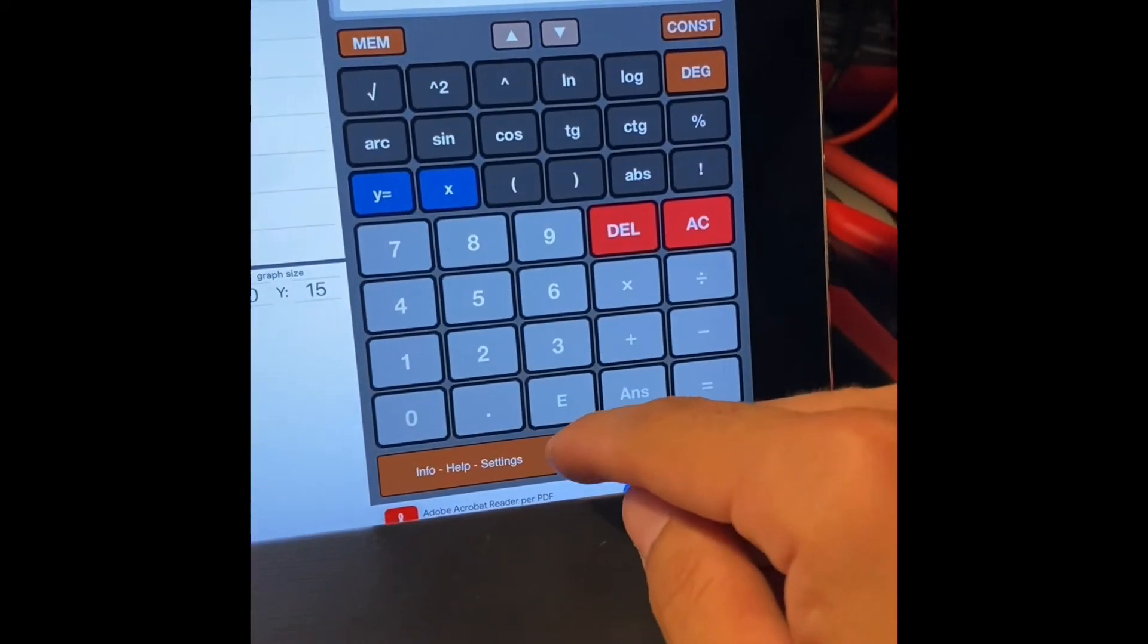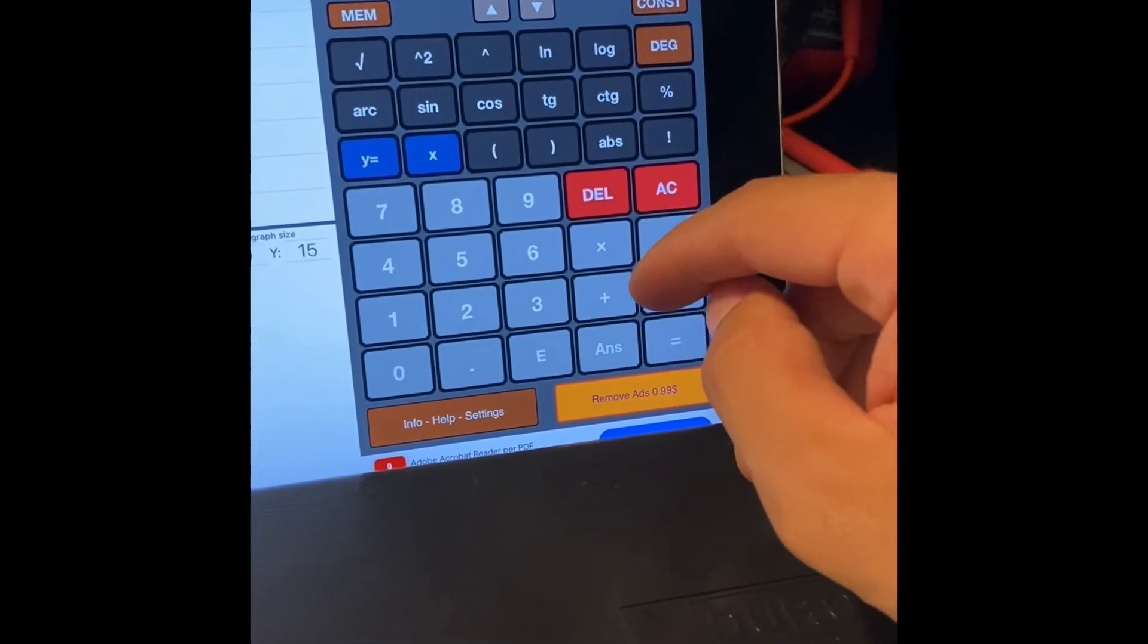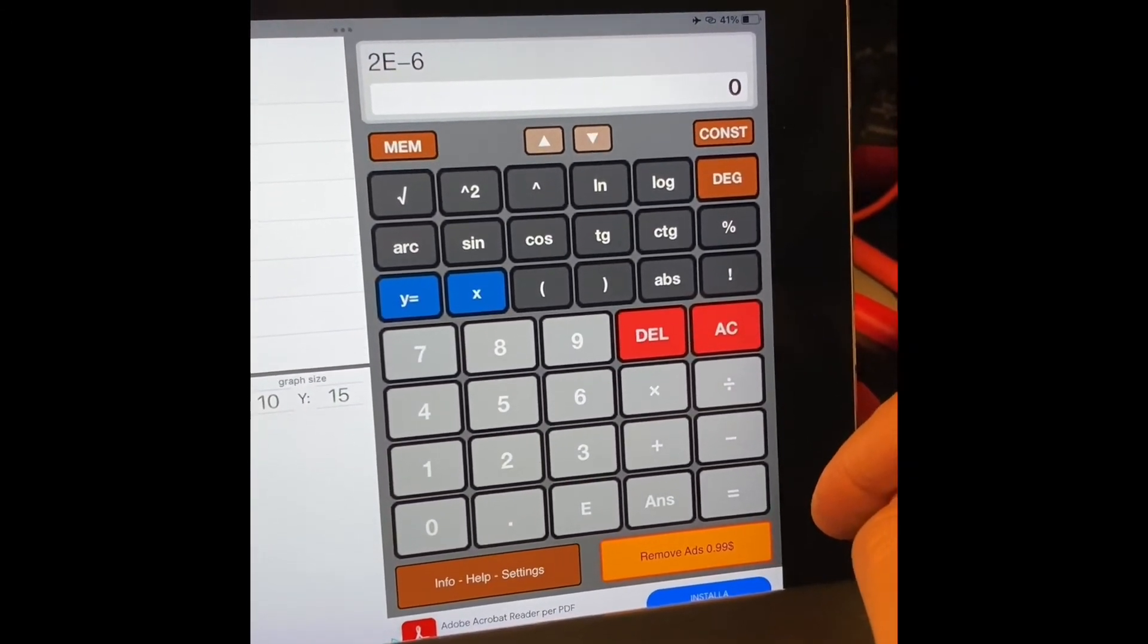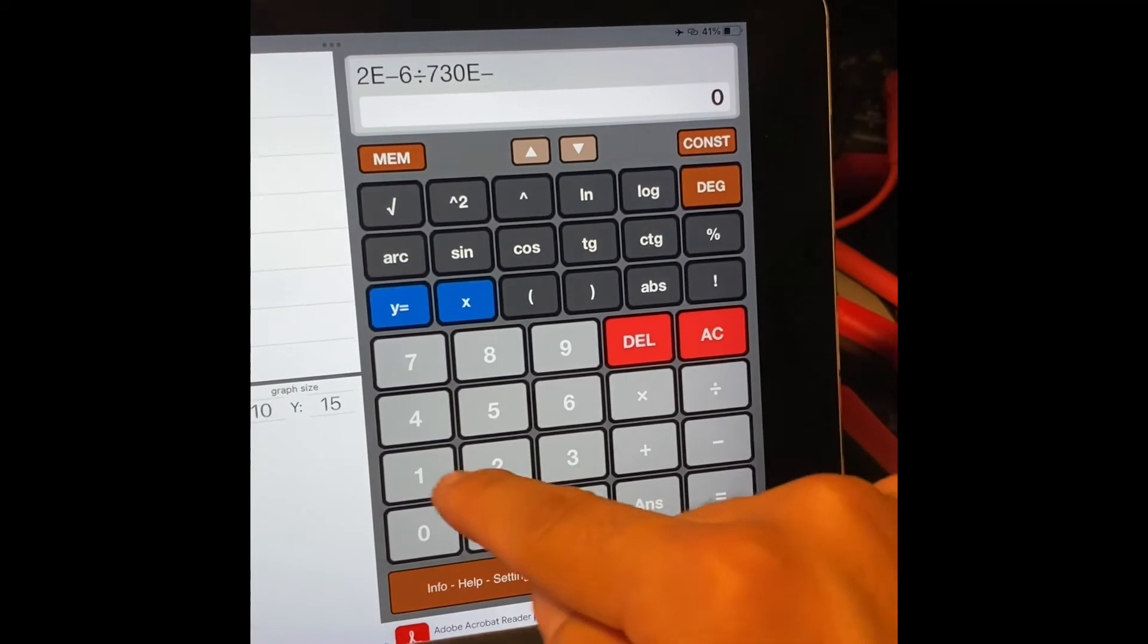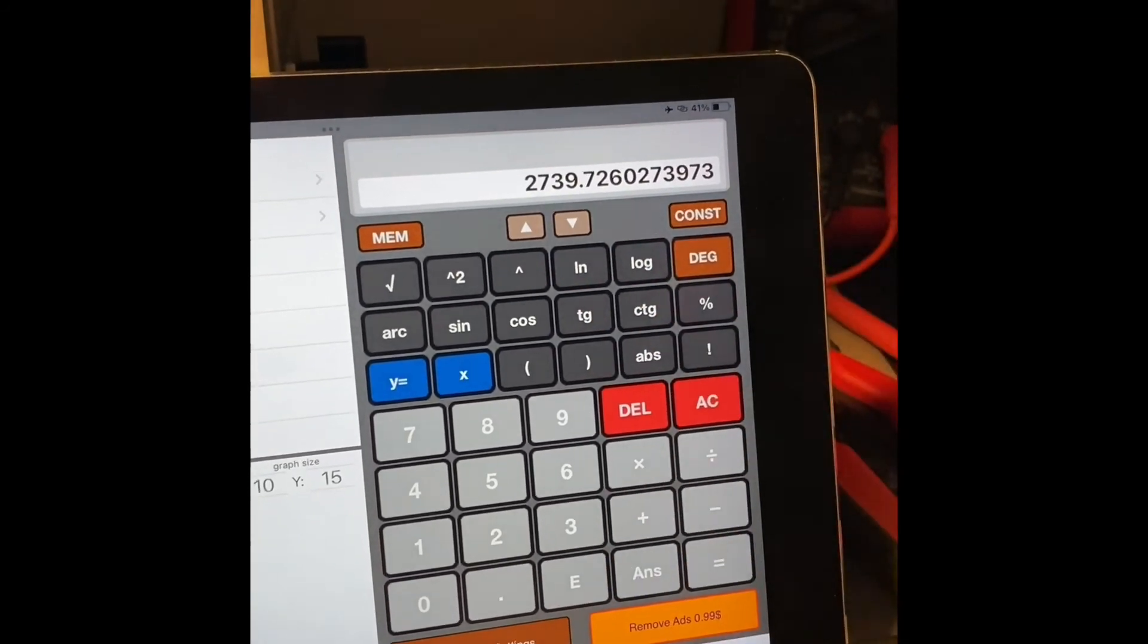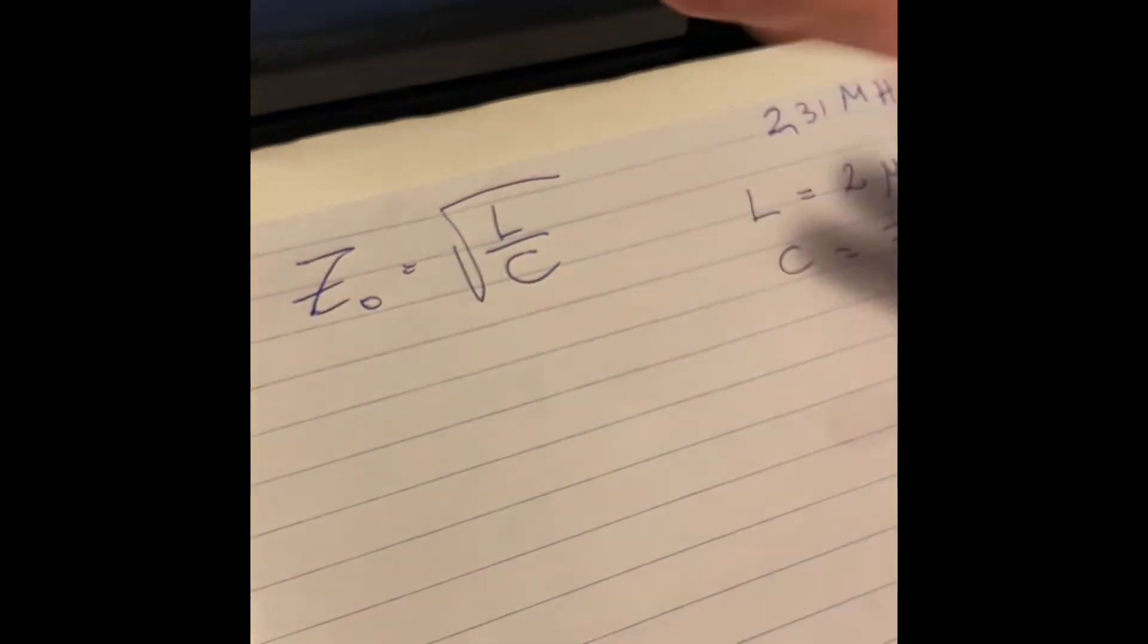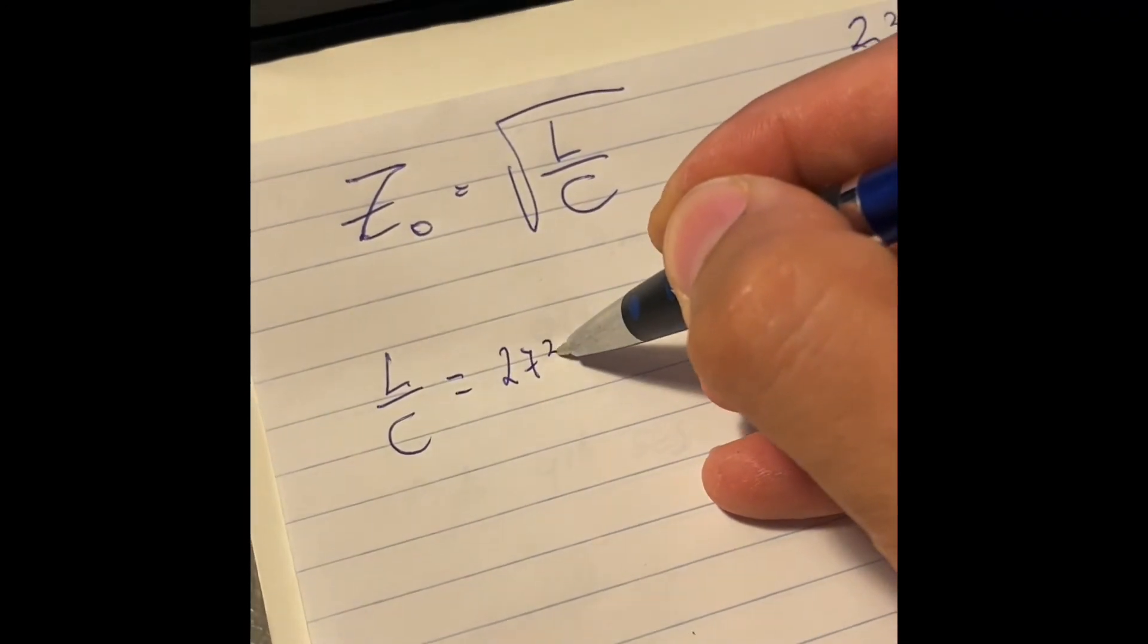Let's grab the calculator from the iPad. I can write the whole formula. We'll do it in steps. So we take 2 times 10 to the minus 6 divided by 730 times 10 to the minus 12. That is the ratio and this is the result: 2739.7. So let's write it down - basically that means L over C is 2739.7.